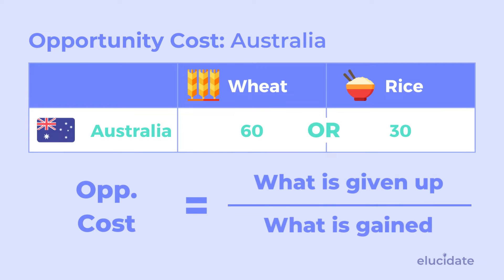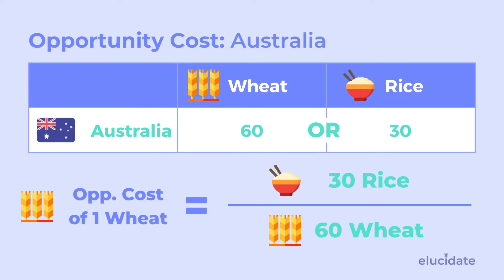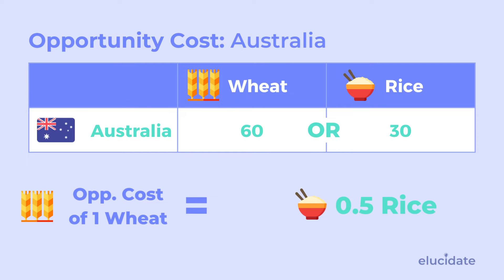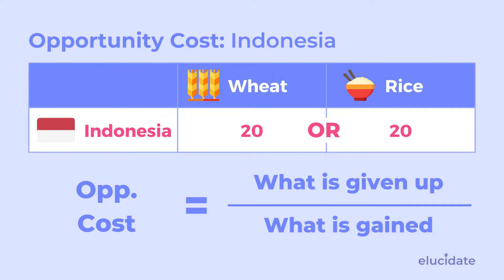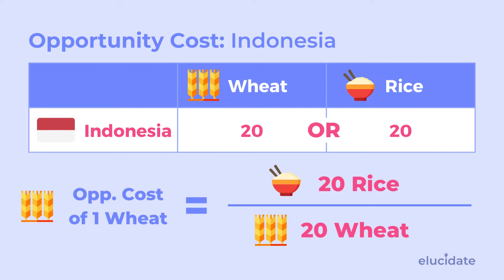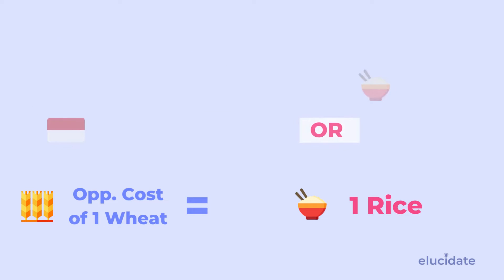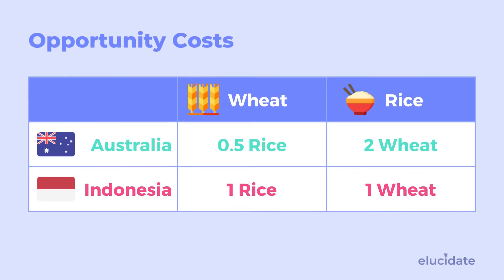If Australia were to produce one unit of wheat, they would lose 30 units of rice over the total gain of 60 units of wheat. So one unit of wheat equals 0.5 rice. For Indonesia, the opportunity cost is what is given up over what is gained: one unit of wheat equals 20 units of rice given up over 20 units of wheat gained — so one unit of wheat equals one unit of rice. If we plot this on a table and do the same calculations for rice, we can calculate the opportunity cost for both wheat and rice for Australia and Indonesia.